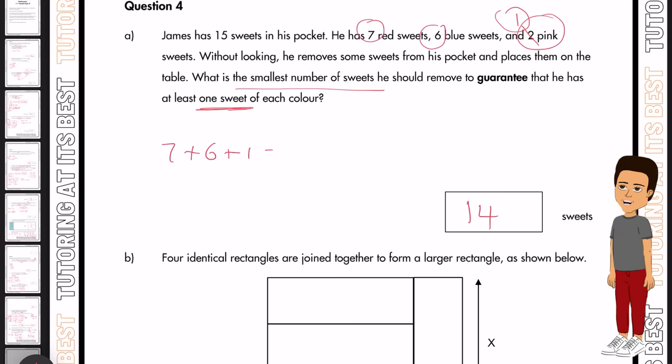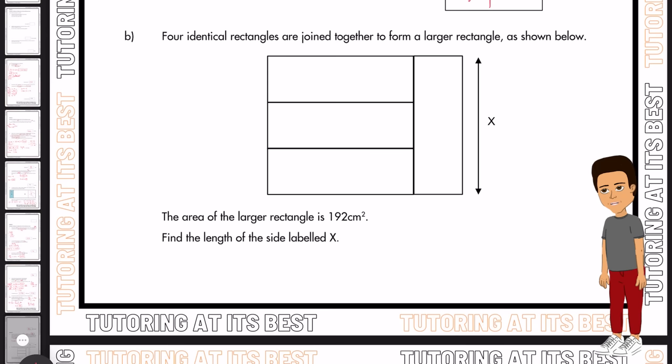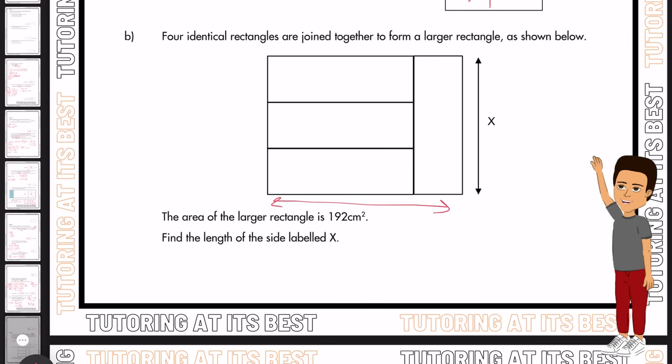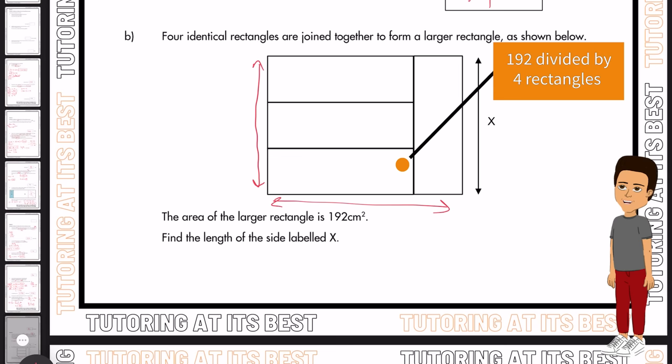Let's dive into part B. Four identical rectangles are joined together to form a large rectangle as shown below. The area of the larger rectangle is 192 centimeters squared. So find the length of the side labeled X. Well, that just means X times this length here gives you 192. So let's understand this a little bit better.